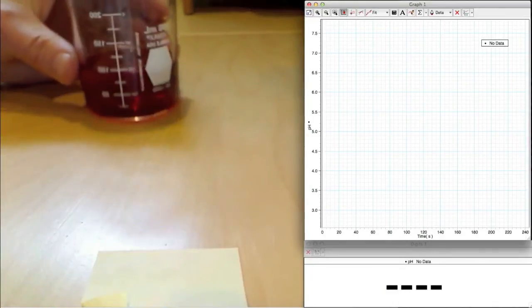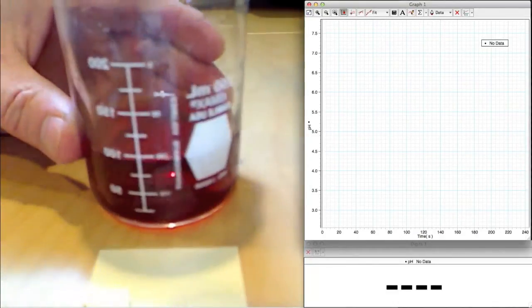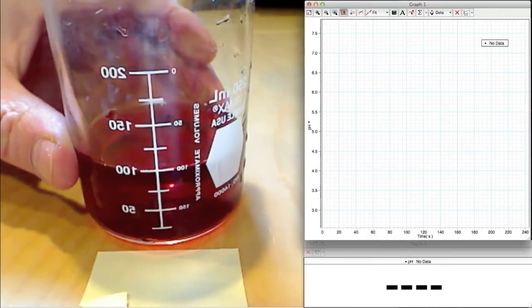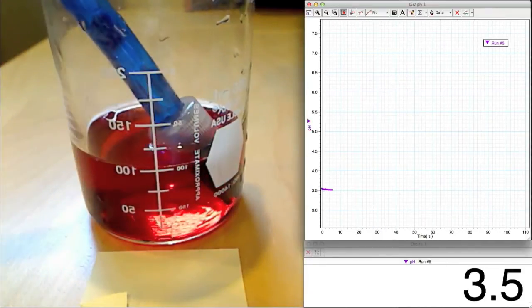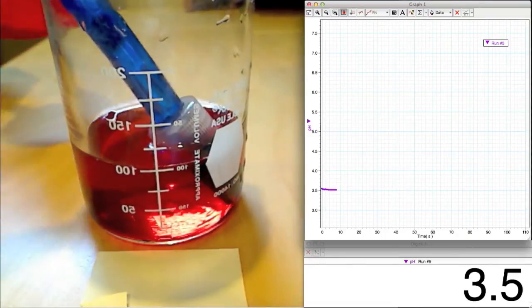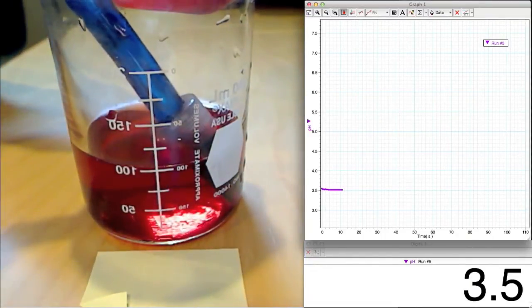So we will use the same amount of cranberry juice as before and make sure we once again have our pH probe in place to track the reaction. We will then dump in our powdered Alka-Seltzer.